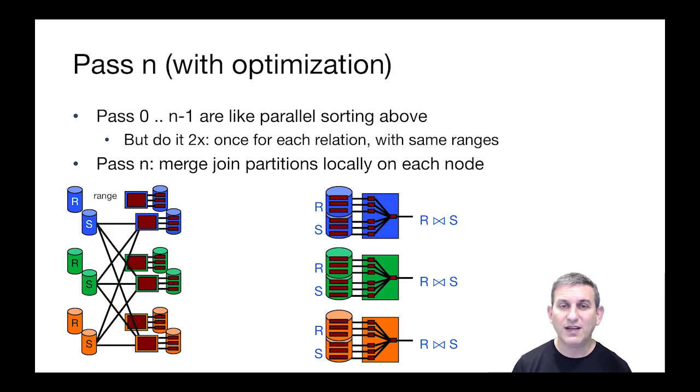And in this picture here, we're doing our little optimization, where the last pass of merging R is also part of the join with S. So we merge R and S at the same time, and we join them together while we're merging.